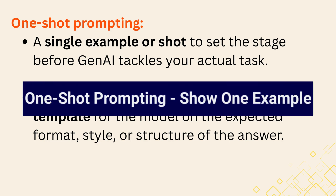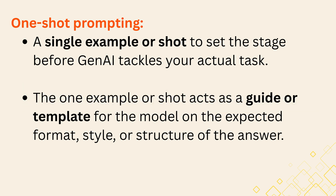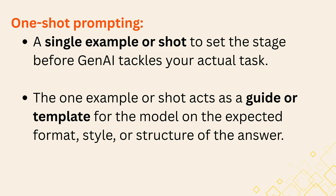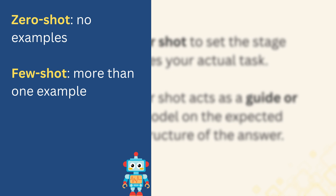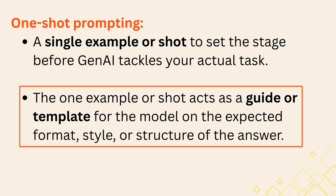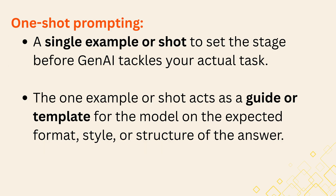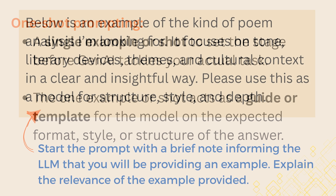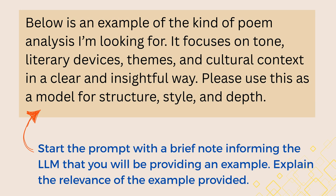One-shot prompting is like giving your AI a single example, or shot, to set the stage before it tackles your actual task. You provide one clear example of what you want, then ask the AI to do something similar on a new input. This is the middle ground between giving no example — zero-shot — and giving several examples — few-shot. The one example acts as a guide or template for the model on the expected format, style, or structure of the answer.